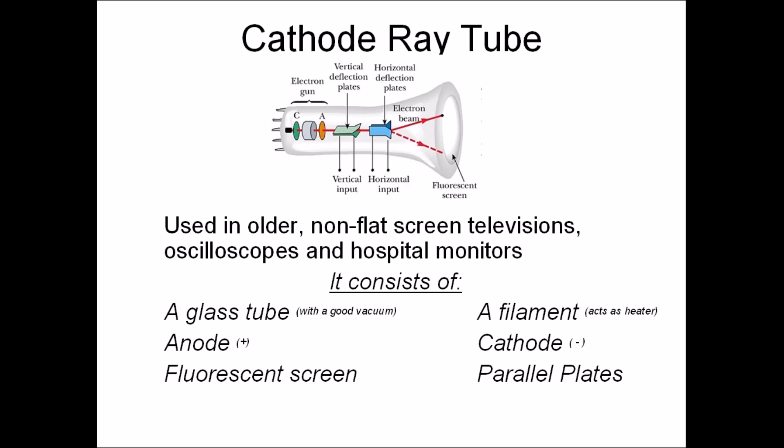Cathode ray tubes were used in older TVs and computer monitors in the past. In medicine it's used in ECGs which stands for electrocardiogram. A cathode ray tube consists of a glass tube in which there should be a good vacuum so molecules in air don't collide with electrons in the cathode ray.